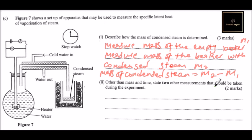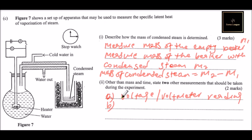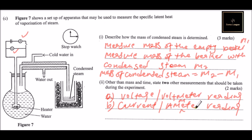Roman numeral two: Other than mass and time, state two other measurements that should be taken during the experiment. The other two measurements are: (a) voltage, or voltmeter reading, and (b) current, or ammeter reading. So we need to get those measurements.